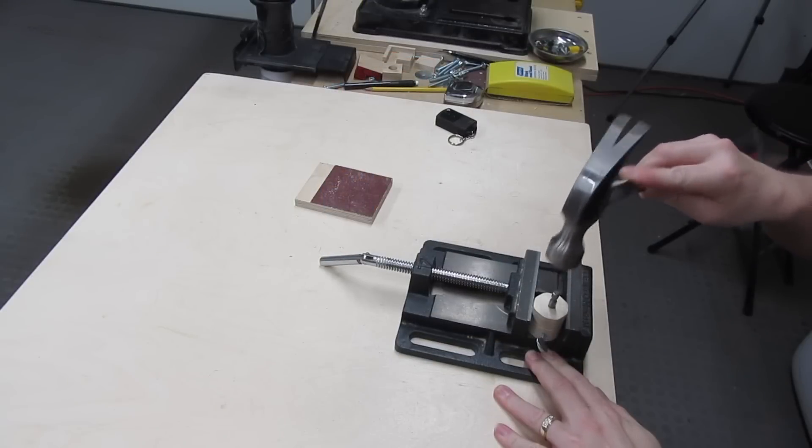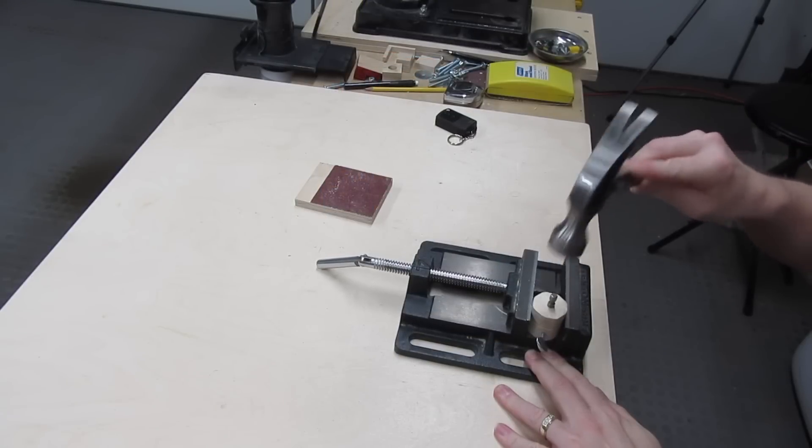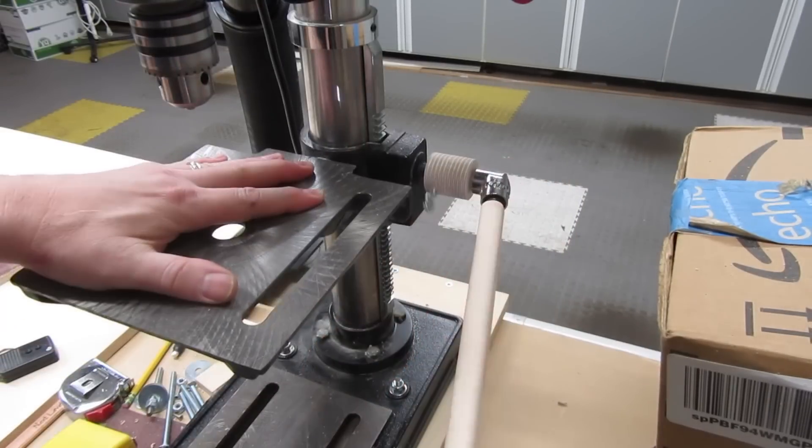Then I carefully tapped it down the rest of the way, trying to keep it straight. I put it on the crankshaft and now it's pretty smooth.